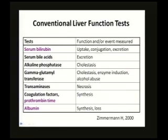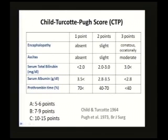The total bilirubin, prothrombin time, and albumin are very well known because they are integrated in the Child-Turcotte-Pugh score. As you all know, there are three liver function tests plus two symptoms — that is encephalopathy and ascites — two important signs for liver failure.